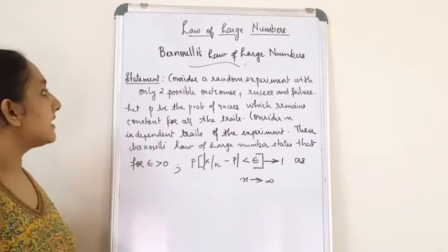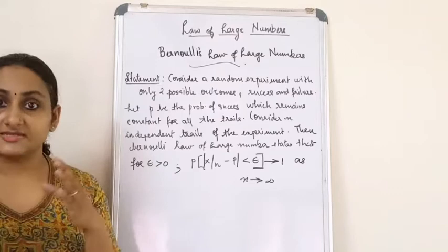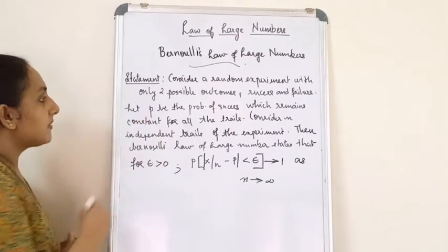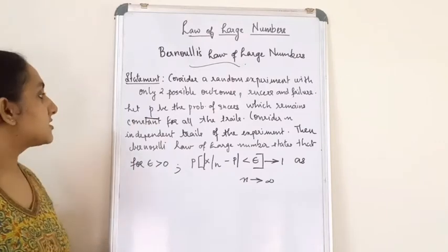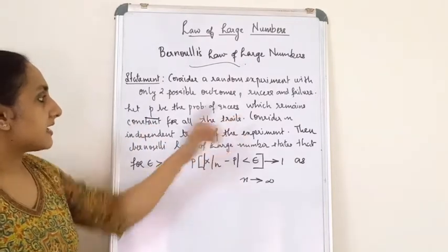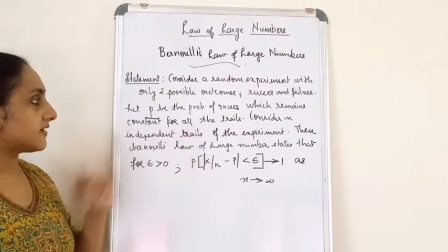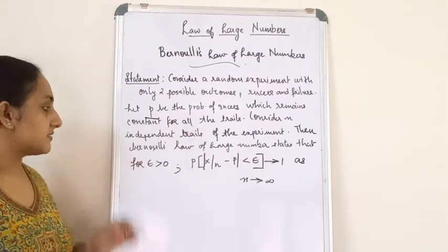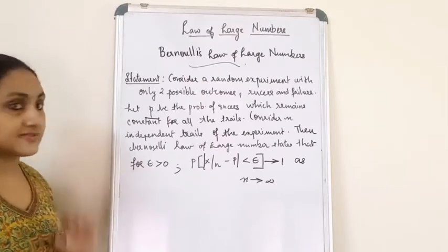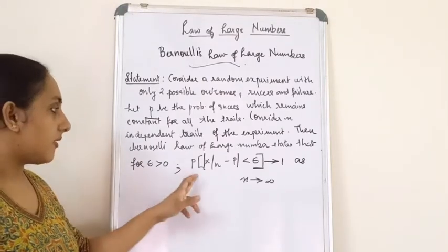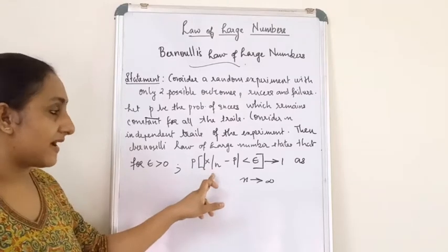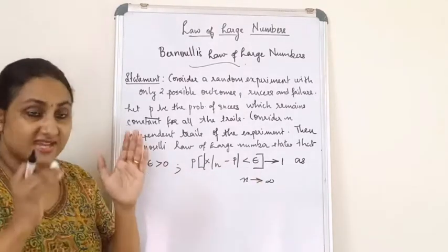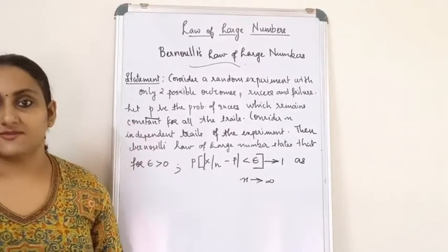Consider a random experiment with only two possible outcomes, that is success and failure, and let P be the probability of success which remains constant for all the trials. Consider N independent trials of the experiment. Then the Bernoulli Law of Large Numbers states that for epsilon greater than 0, the probability of |x/n − P| less than epsilon tends to 1 as n tends to infinity.